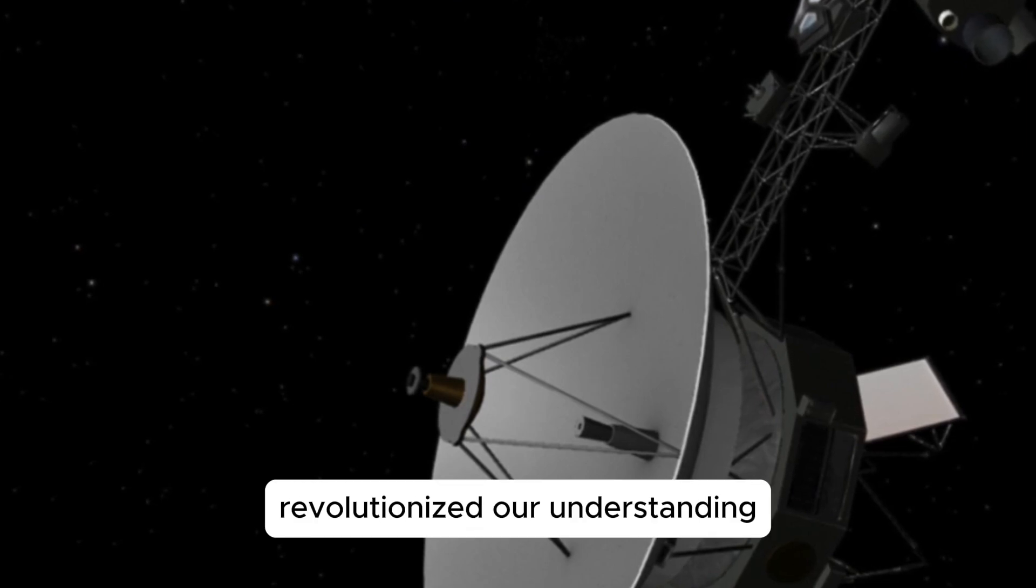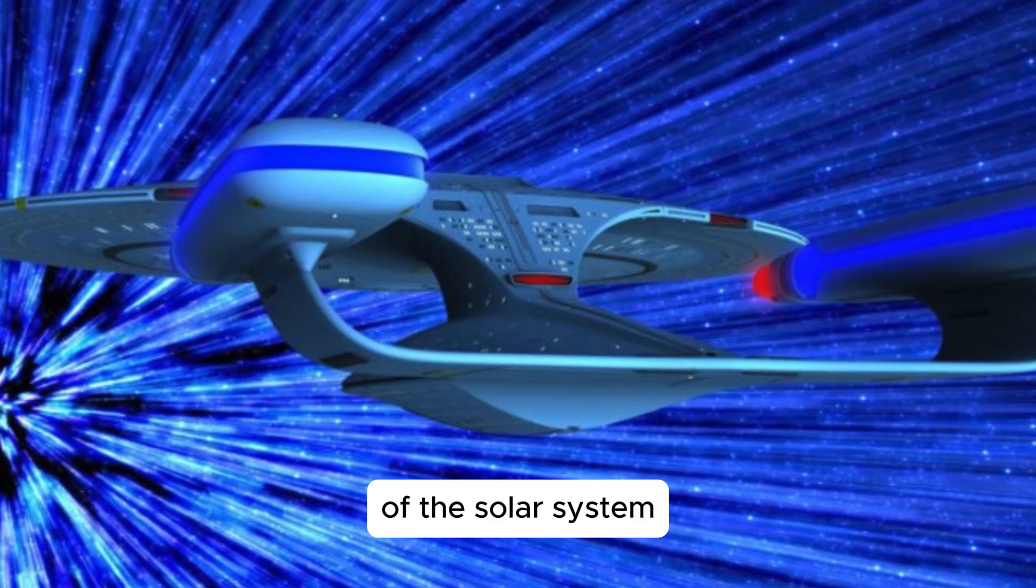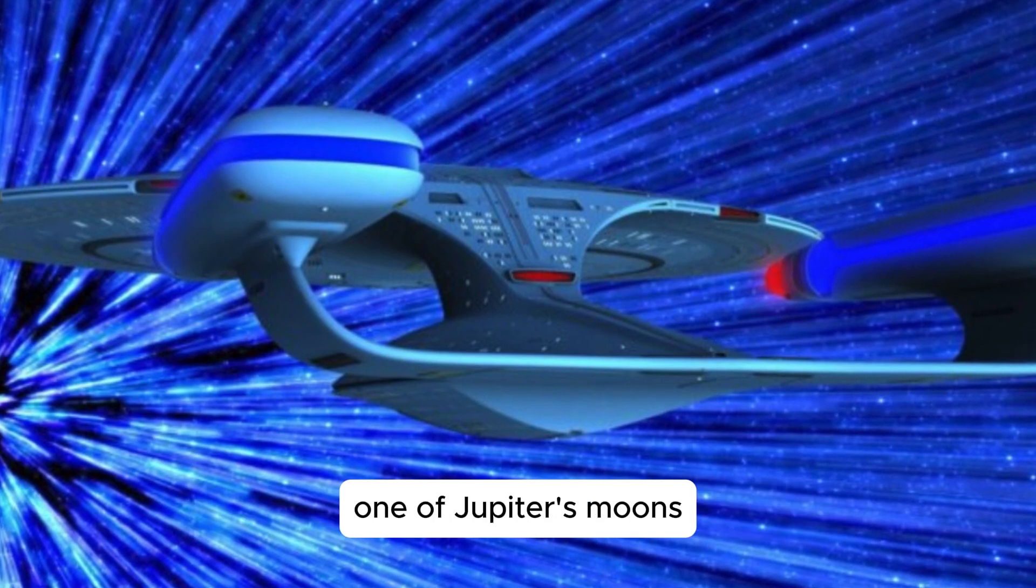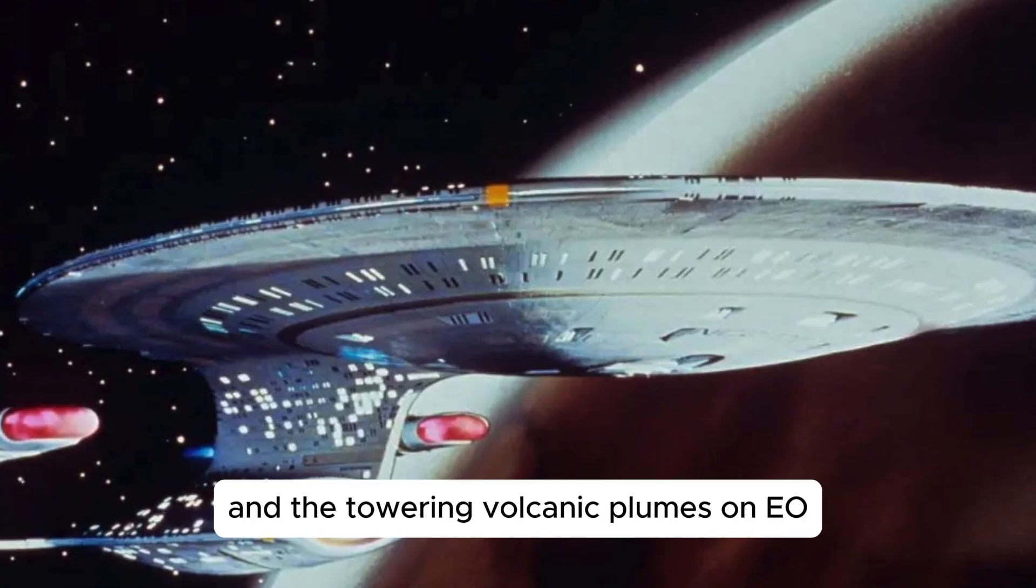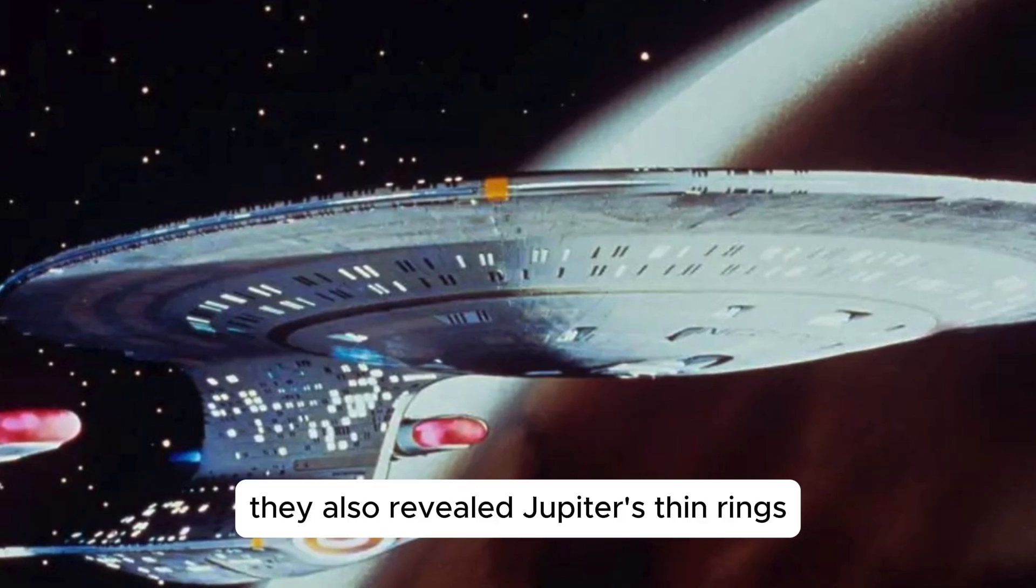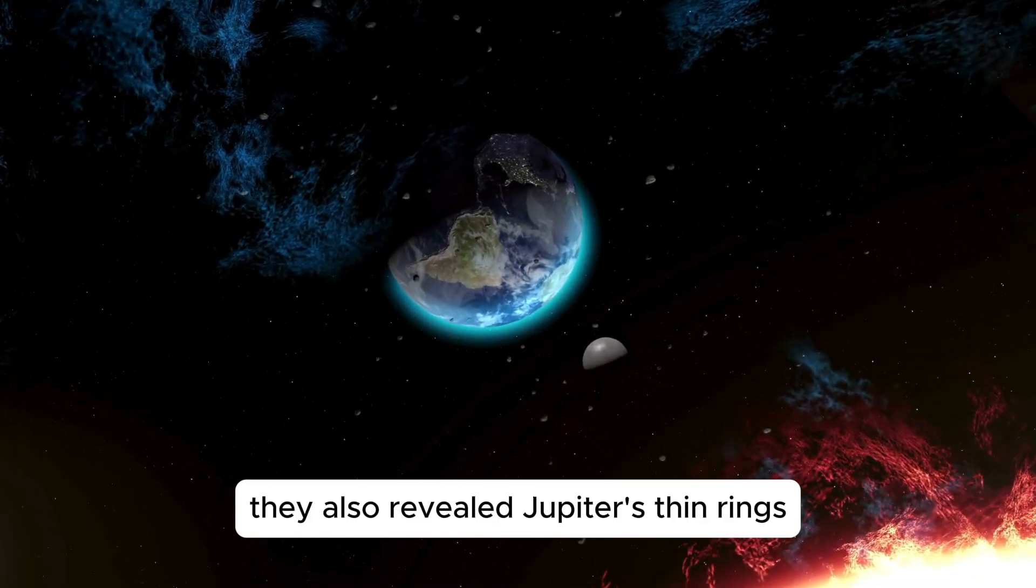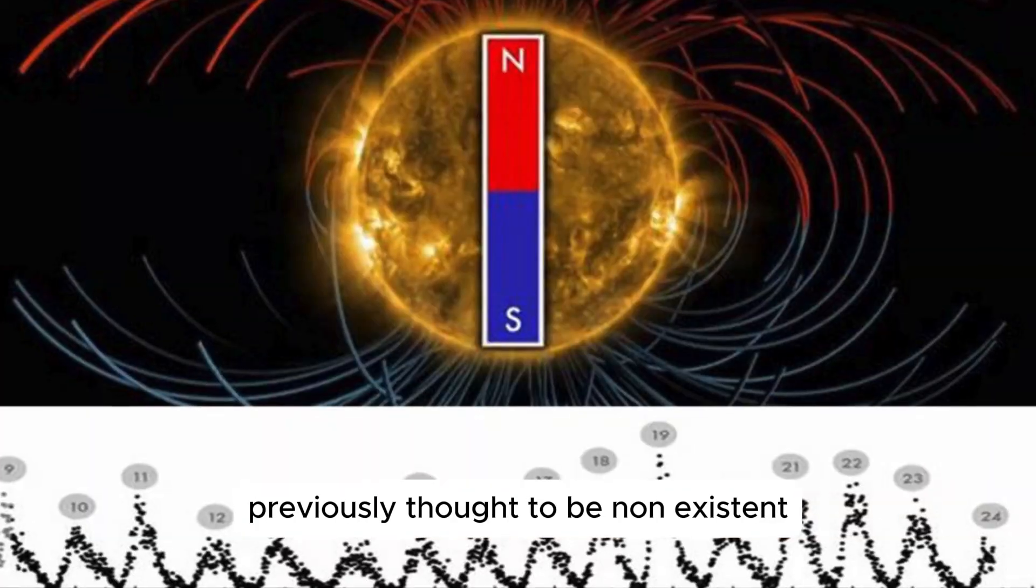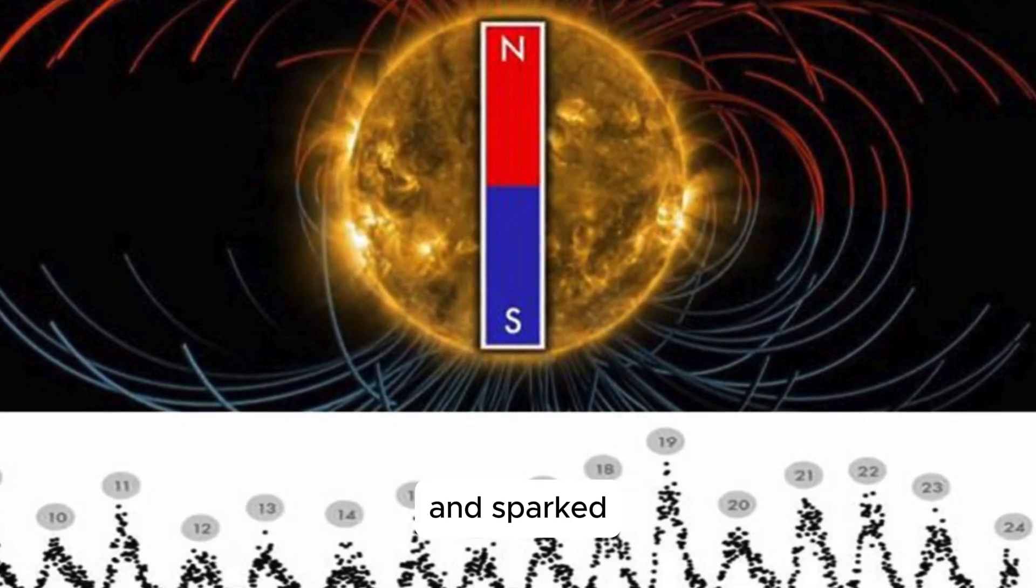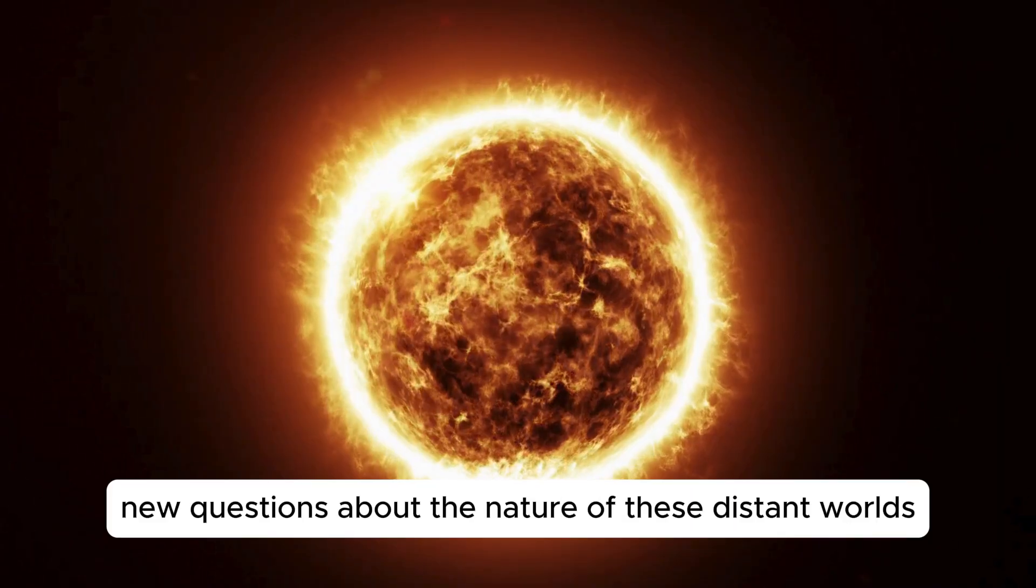The Voyager missions have revolutionized our understanding of the solar system. Their data uncovered the icy shell of Europa, one of Jupiter's moons, and the towering volcanic plumes on Io, another of Jupiter's moons. They also revealed Jupiter's thin rings, previously thought to be non-existent. These discoveries challenged preconceived notions and sparked new questions about the nature of these distant worlds.